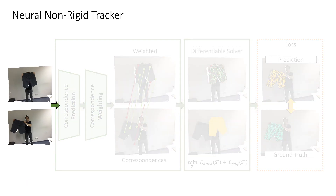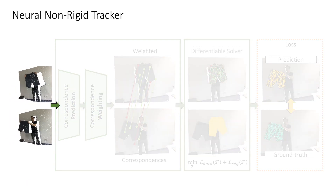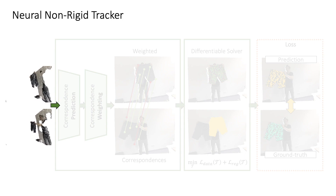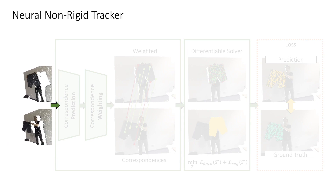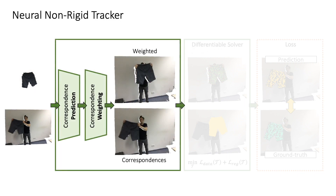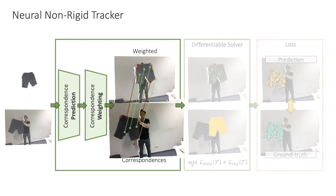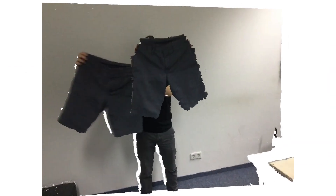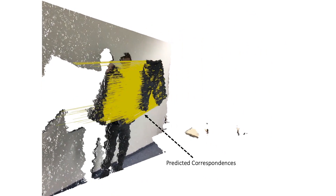In particular, given a pair of source and target RGBD frames and the foreground mask of the object we want to track, we first predict correspondences from source to target, as well as an importance weighting to deal with outlier observations. For each correspondence, we predict an importance weight between 0 and 1, allowing us to down-weight outliers.